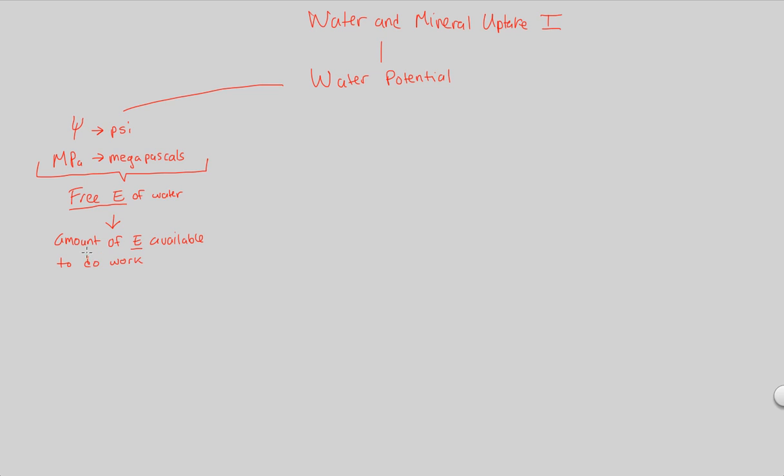Water has a certain amount of energy available to do work. What is that energy signified as? Well, it's signified as psi. The water potential to do work is signified through psi and measured in megapascals.